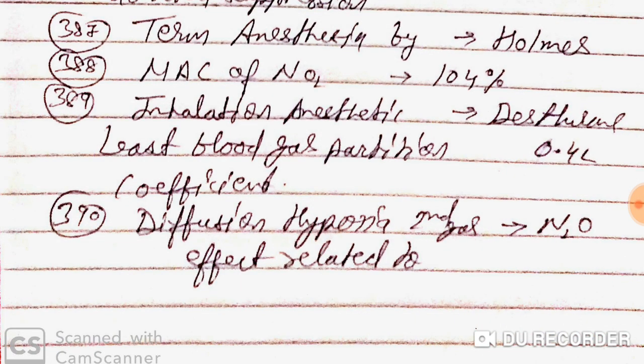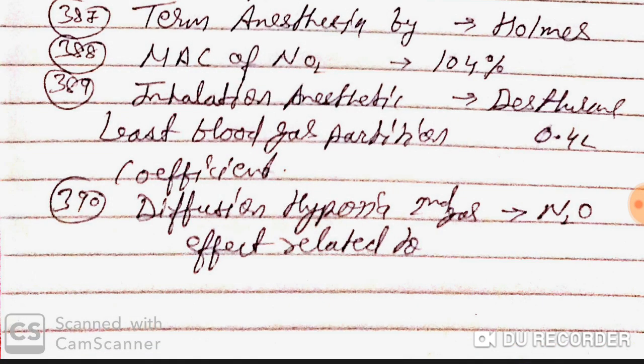The MAC of nitrous oxide is 104%. The inhalation anesthetic with the least blood-gas partition coefficient is desflurane, at 0.42. Diffusion hypoxia and the second gas effect are related to nitrous oxide.